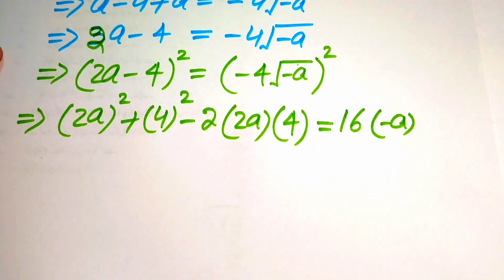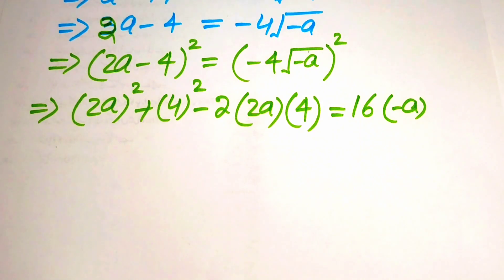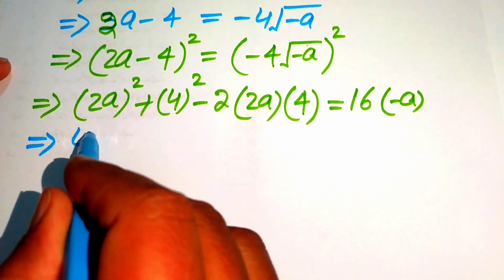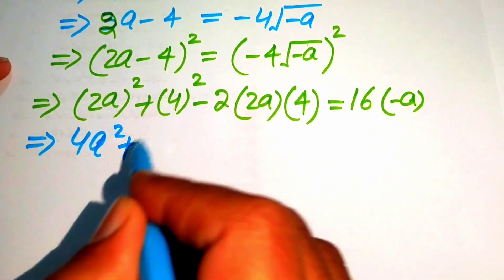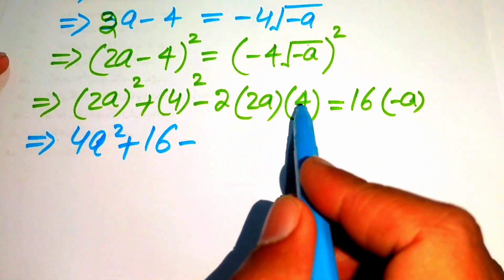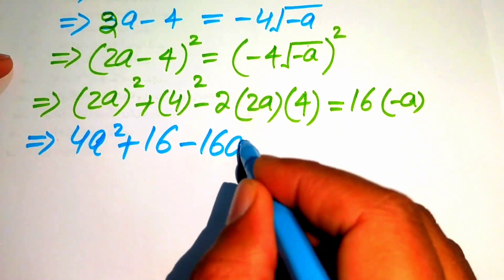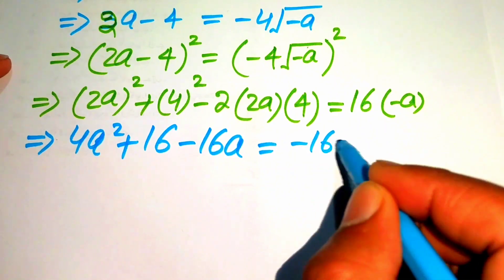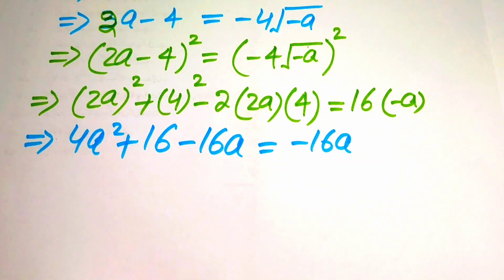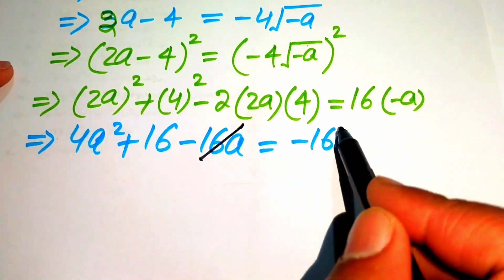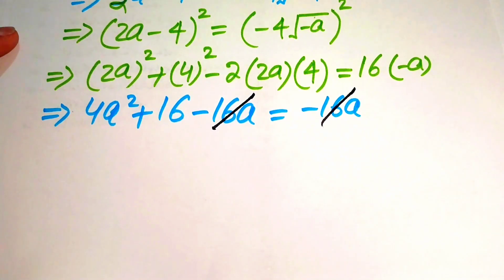Simplifying, we get 4a² + 16 − 16a equals −16a. Focusing on both sides, we see that −16a and −16a cancel each other, giving us 4a² + 16 equals 0.